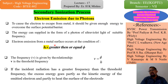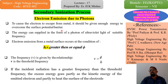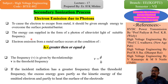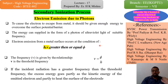The second secondary ionization process is electron emission due to photons. To cause an electron to escape from a metal, it should be given enough energy to overcome the surface potential barrier. The energy can be supplied in the form of a photon of ultraviolet light of suitable frequency. In the previous lecture on photo ionization, you can see the full process. The condition for ultraviolet electron emission from a metal surface is that HV must be greater than or equal to φ (phi).